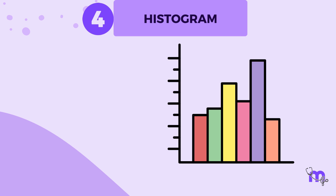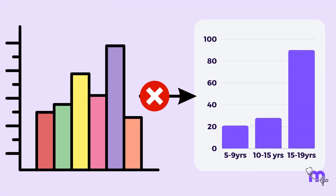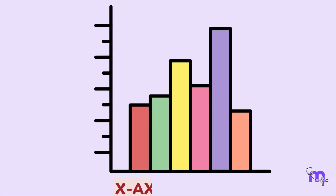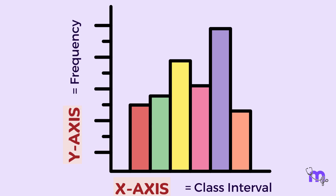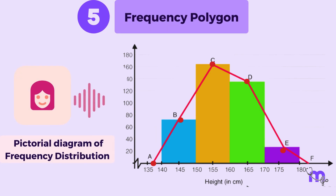A histogram is another diagram where the pictorial representation of frequency distribution is done. There is no space between the cells in a histogram, which distinguishes it from a bar graph that has space between the cells. In a histogram, the class interval is given on the x-axis and the frequency along the y-axis. The frequency polygon is also a type of pictorial diagram of frequency distribution. To draw it, a point is marked over the midpoint of each histogram block and these points are connected by straight lines.